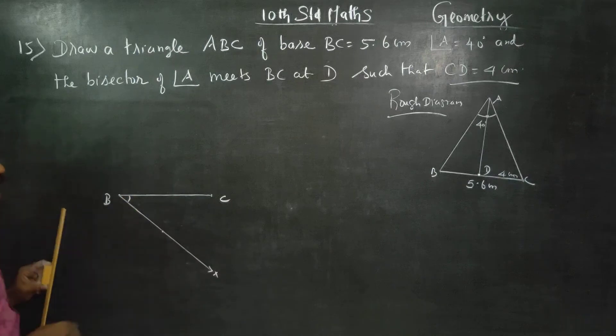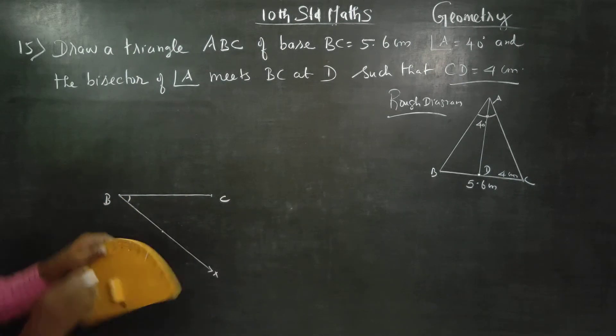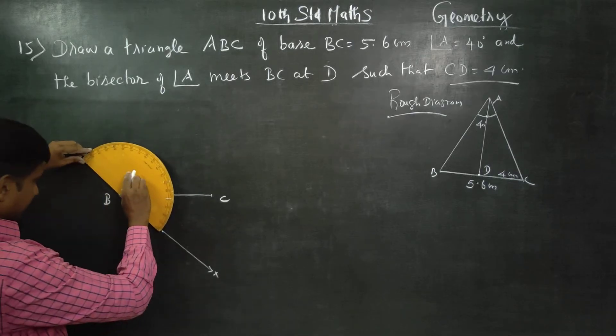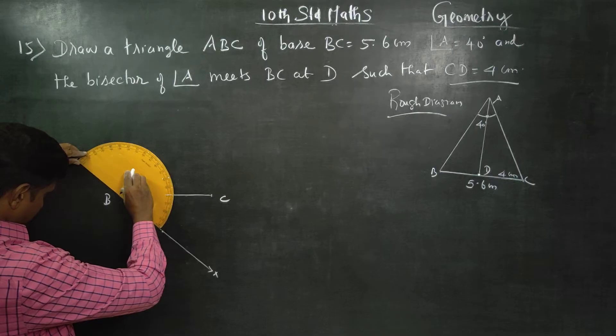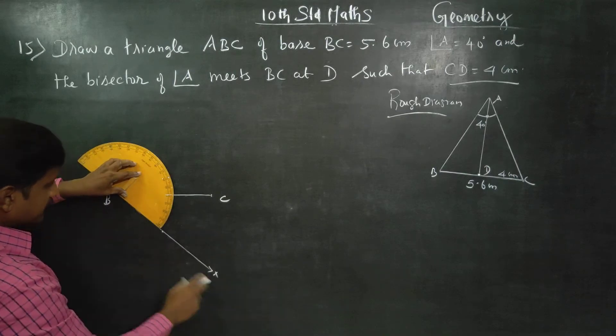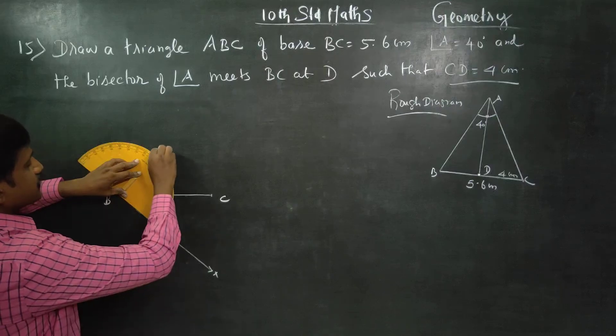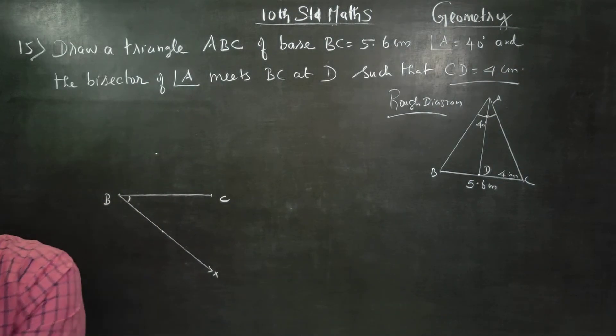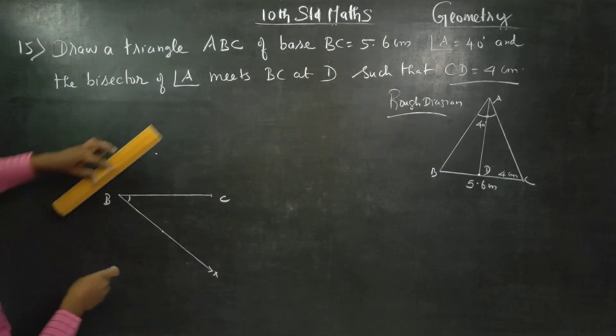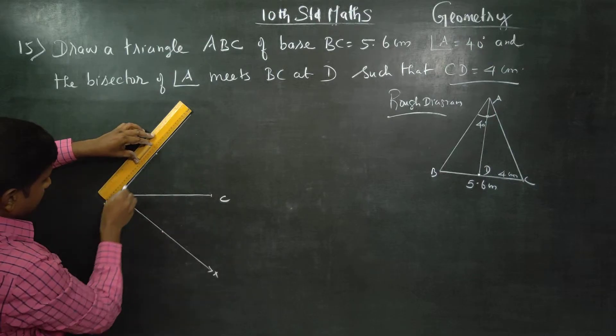This is my 40 degree. After this 90 degree, this is my 40 degree BX. Mark BX ray. Mark 90 degree: 10, 20, 30, 40, 50, 60, 70, 80, 90. 90 degree mark. 90 degree draw a straight line.